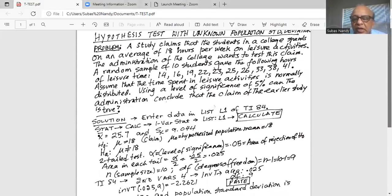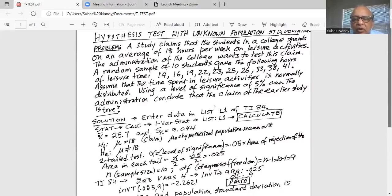Solution. First, we will enter the data in L1 of TI-84. In order to do that, we will press second, then plus on top of enter in the extreme right bottom, and then number four. We get clear all list done. Then we will press stat and one, and we will enter the data points in L1.